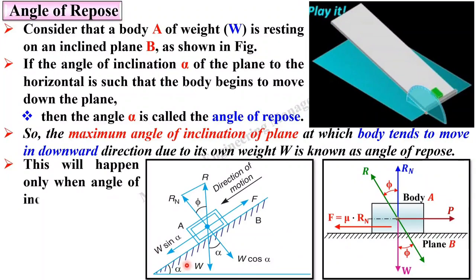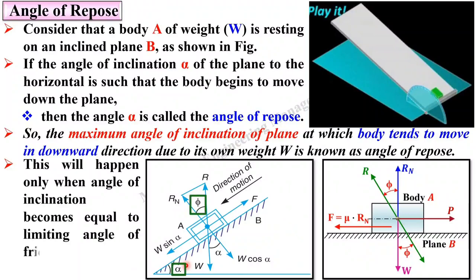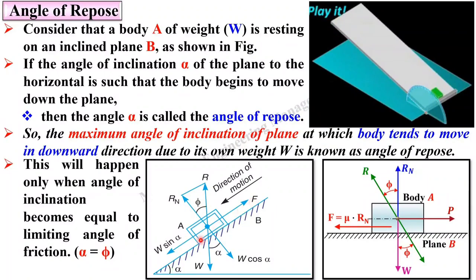This will happen only when the angle of inclination alpha becomes equal to the limiting angle of friction phi. When alpha equals phi, the body tends to move in the downward direction, and at that point alpha is the angle of repose. If you have any doubts, write in the comment box. Thanks for watching this video — please hit the like button to appreciate.